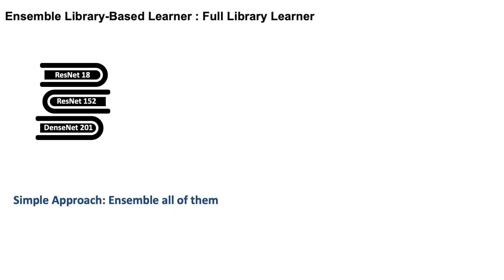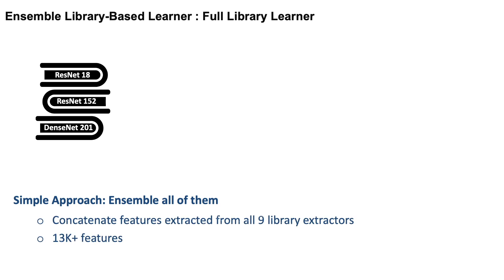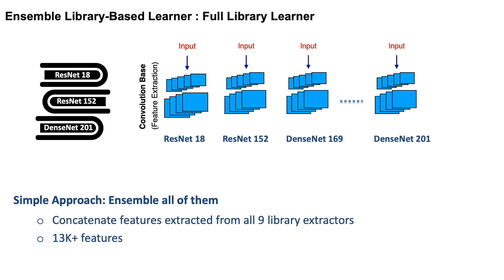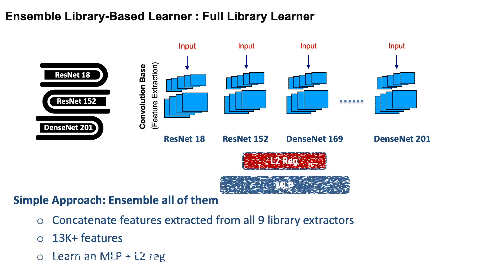It is very natural to ask: is it possible to use all of these feature extractors to develop an even better few-shot learner? We found a very simple approach — just ensemble all of those library feature extractors. We concatenate the features extracted from all nine different libraries, giving 13K-class features, and build one MLP with L2 regularization on top. We call this method the full library learner.